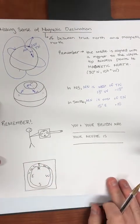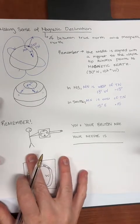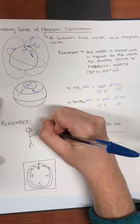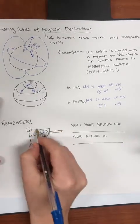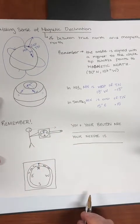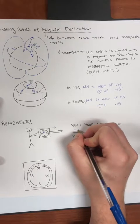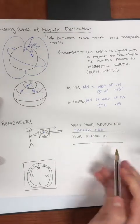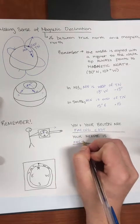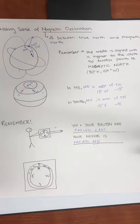Remember that the needle is always pointing toward magnetic north — this is where most people get confused. For example, if you're holding a Brunton and your needle is pointed toward east, you and your Brunton are facing east because that's what you're reading. But your needle is pointing toward magnetic north. It is never pointed in the direction you are facing unless you are also facing magnetic north.